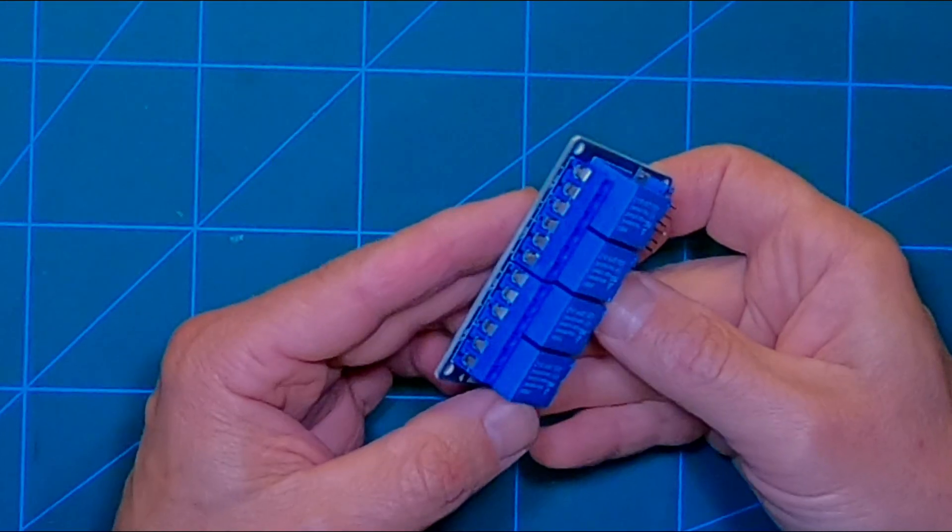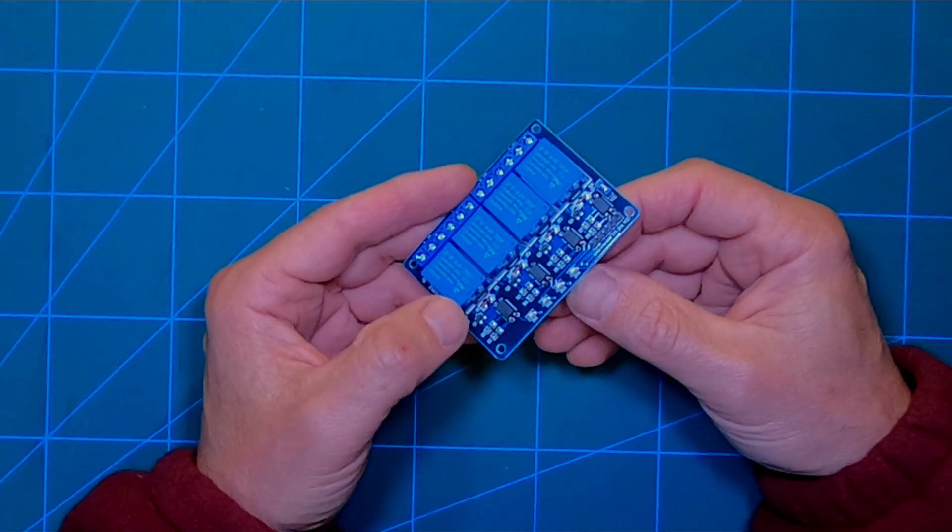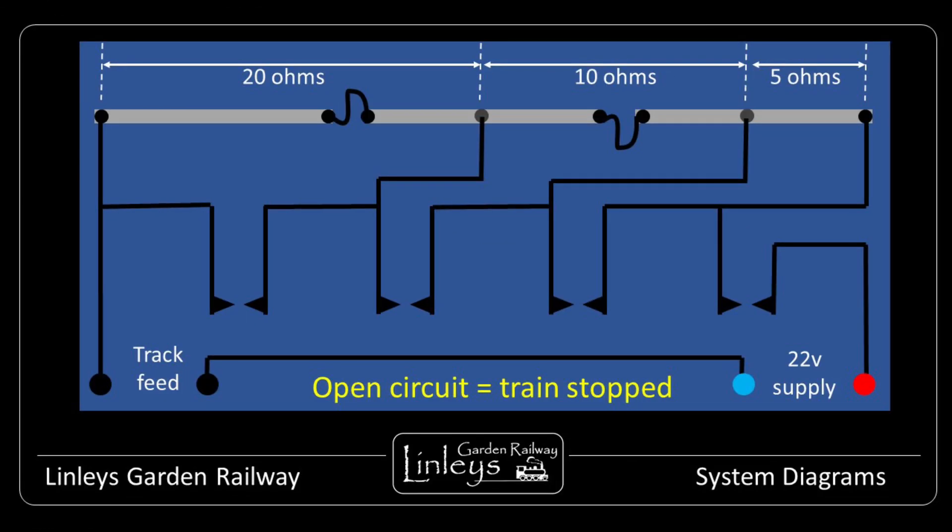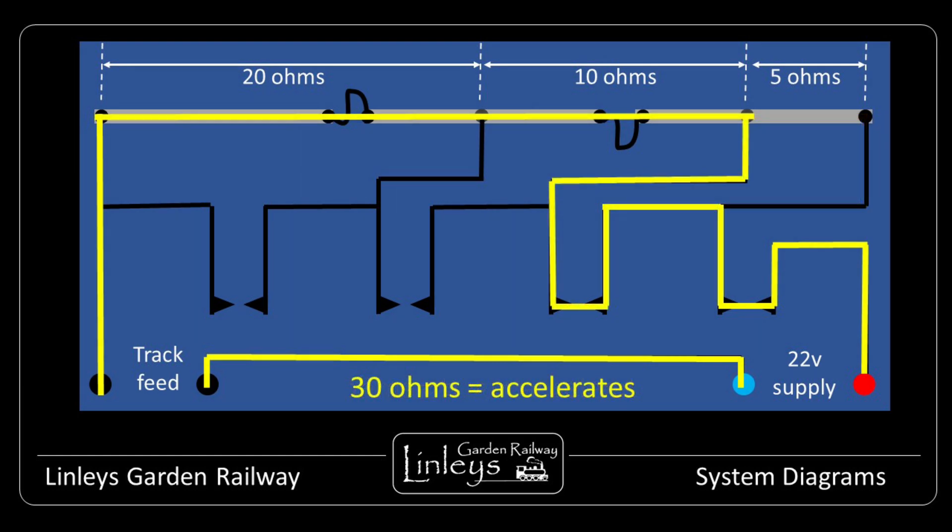The switch side of the relays connect to various points along the resistor array, and by changing the combination of relay ons and offs, a ramping up of resistance or a decreasing of resistance can be achieved. This then simply causes the train in the block section to decelerate or accelerate as the track power is changed.